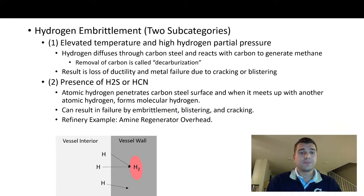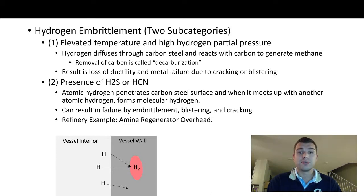Hydrogen embrittlement has two subcategories. The first involves elevated temperature and high hydrogen partial pressure — in a refinery context I immediately think of hydrotreating. In that environment, hydrogen can diffuse through carbon steel and react with carbon to generate methane, removing the carbon in a process called decarburization. Decarburization results in loss of ductility and could cause metal failure through cracking or blistering.